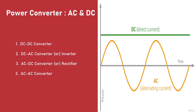Based on this classification we can have four types of power converters: a DC-to-DC converter, a DC-to-AC converter which is commonly called an inverter, an AC-to-DC converter which is commonly called a rectifier, and an AC-to-AC converter. For example, a DC-to-AC converter converts power from an input DC source to an output AC load.